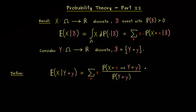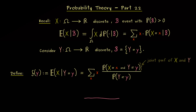The numerator here is often called the joint probability mass function of the two random variables — in short, the joint PMF of X and Y. Now you see that for different values of lowercase y, we get different results in the conditional expectation. In other words, we have a function with input given as lowercase y — a real-valued function defined on the real number line.